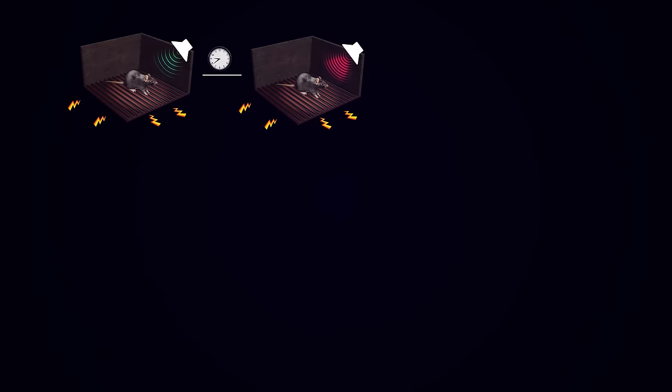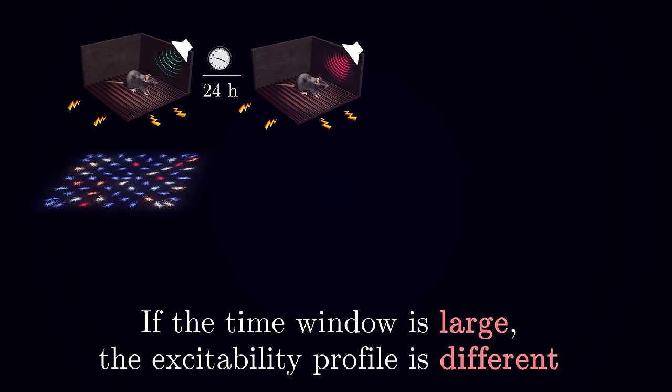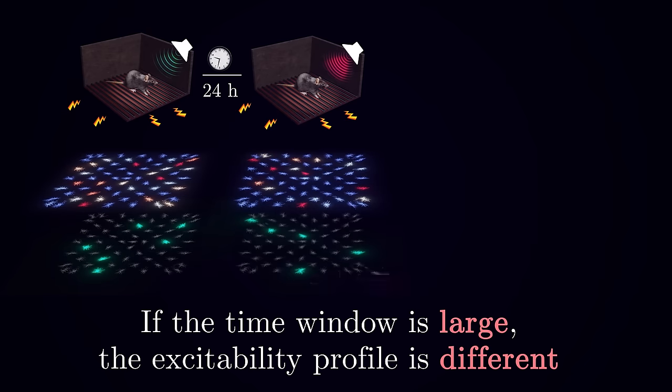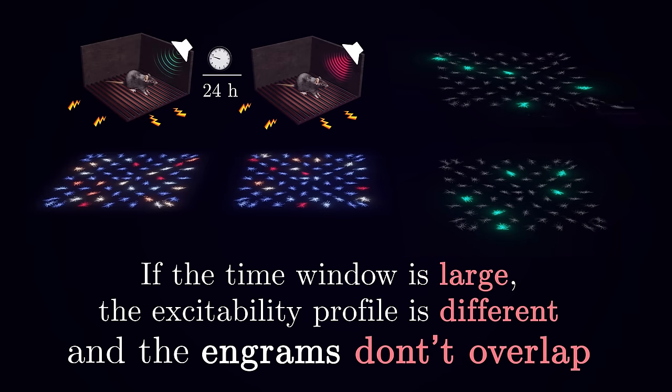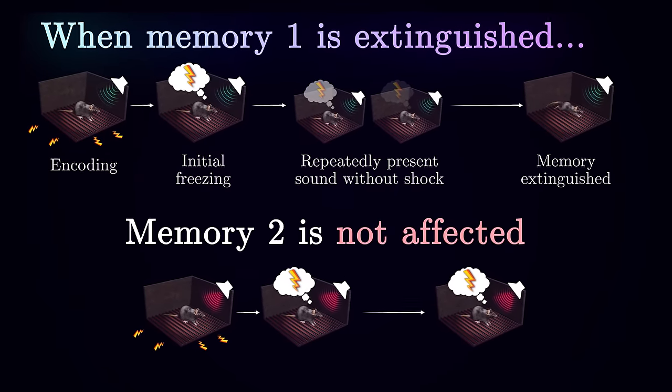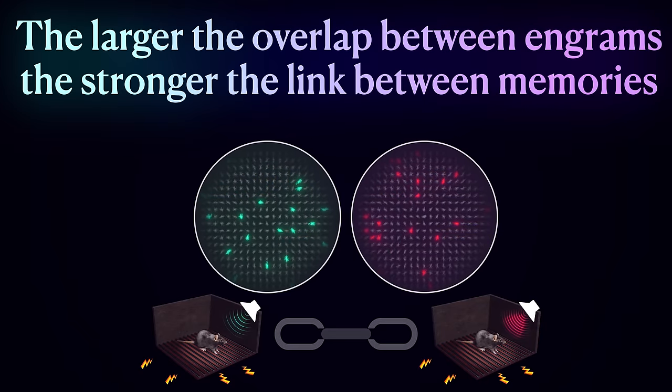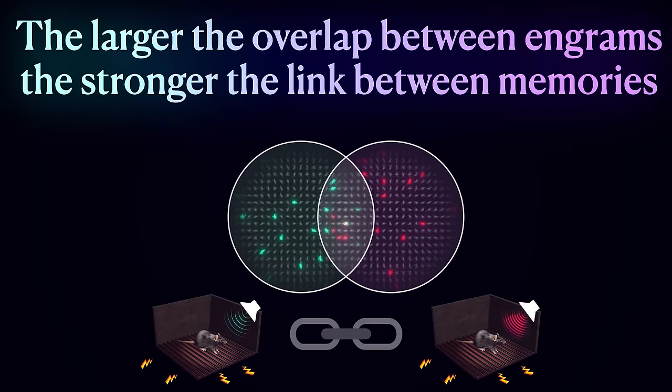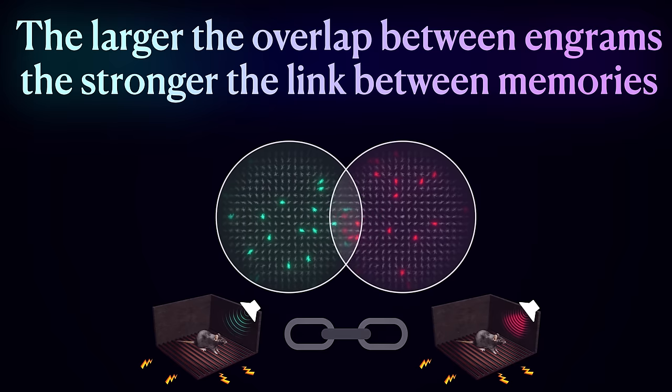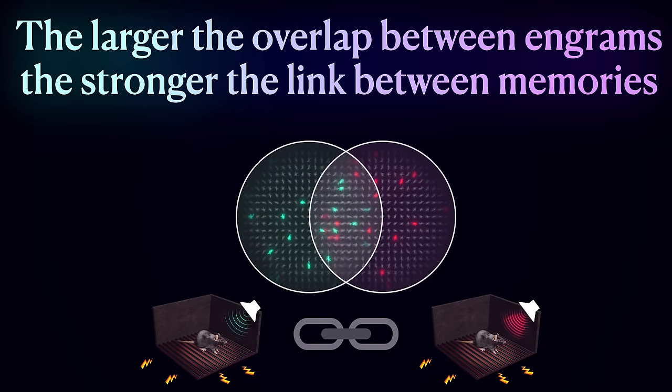In contrast, if during training the fear conditioning sessions are separated by 24 hours instead of 6, populations recruited to the two engrams are mostly non-overlapping and it is possible to extinguish one memory without affecting the other. This demonstrates that the larger the overlap between the populations of engram neurons, the stronger the link between memories, so that thinking of one experience automatically makes you think of the other.